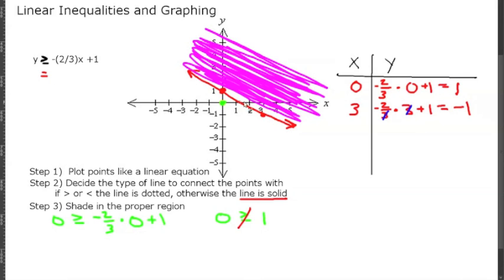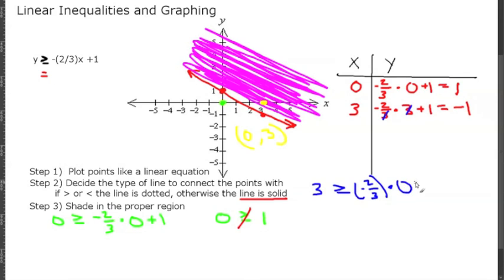Let's double check this. The point (0, 3) falls within the shaded region. Plugging in 0 for x: 3 is greater than or equal to negative 2/3 times 0 plus 1, which gives us 3 is greater than or equal to 1. That is true, so our shaded region is correct.